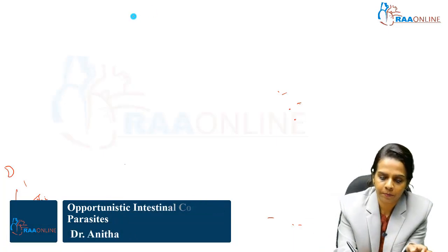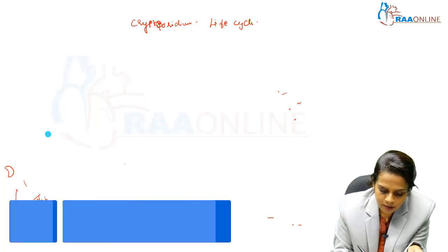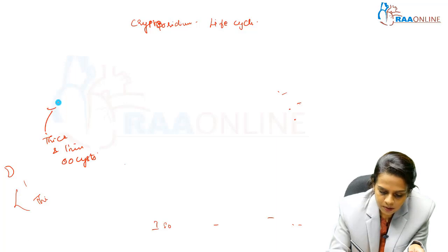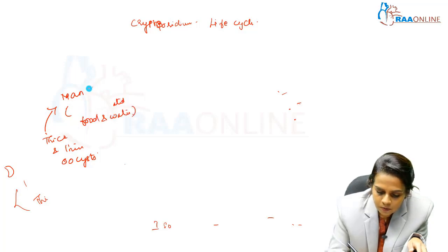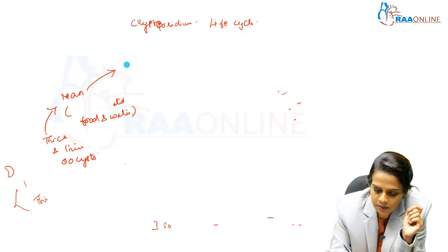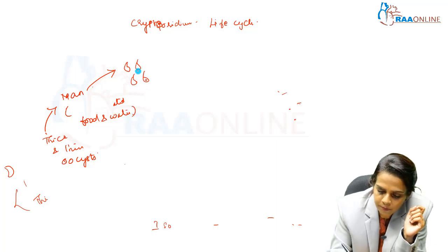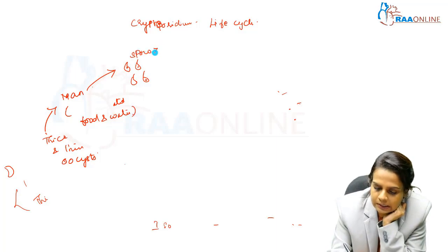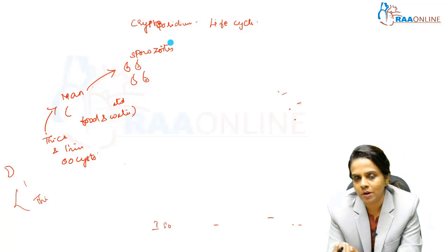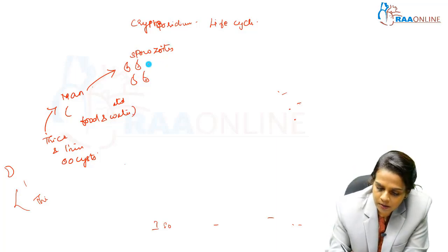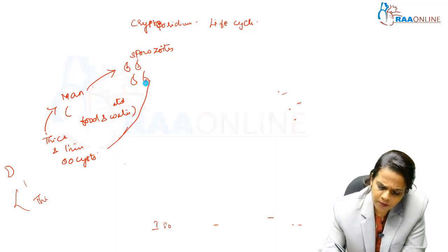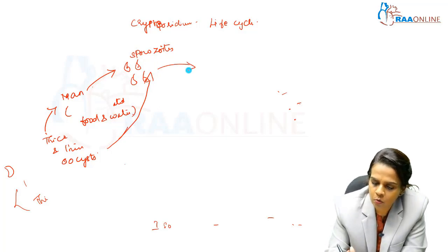Let me explain the life cycle of Cryptosporidium. After ingestion of thick and thin walled oocysts, it infects man through the feco-oral route, that is through contamination of food and water. Once ingested, sporozoites are released in the small intestine — this is excystation, mainly because the sporozoites secrete enzymes like proteases that help in excystation. Thin walled oocysts by auto-infection also infect the same person and release sporozoites.